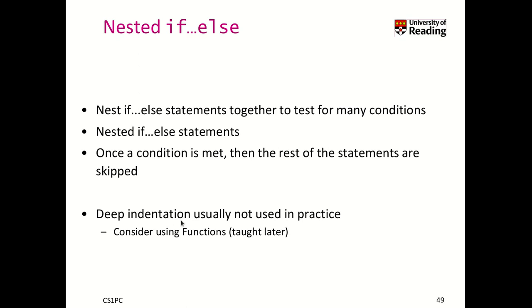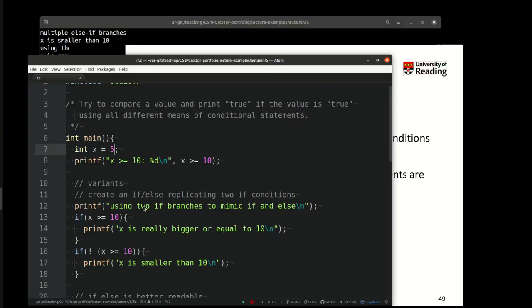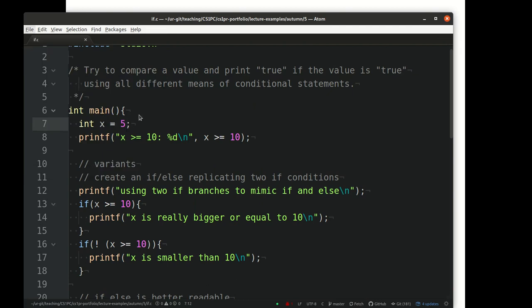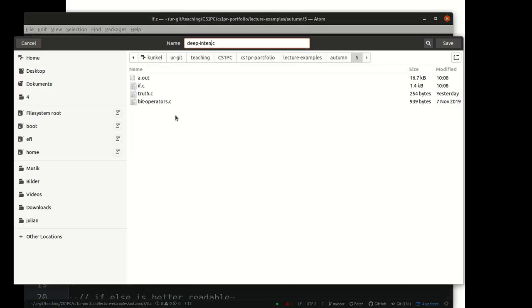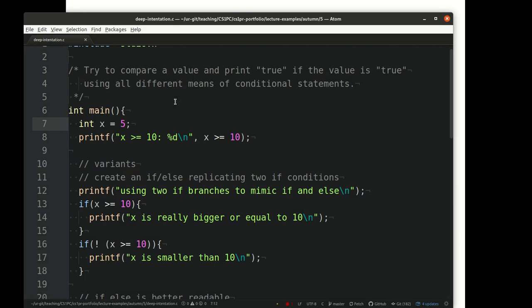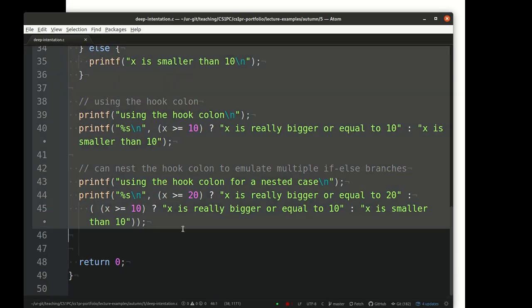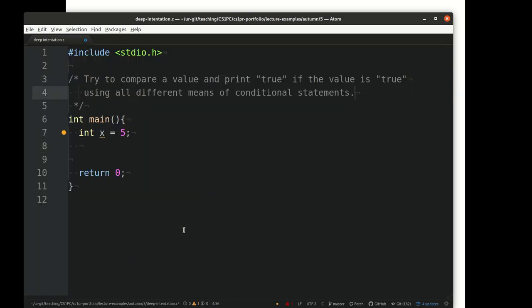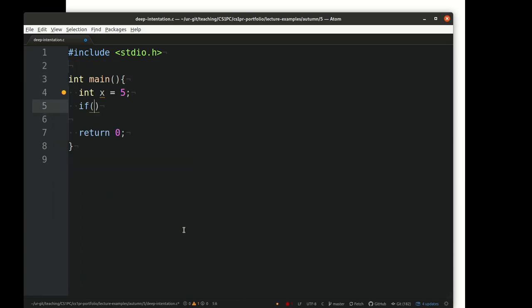You should try to avoid deep indentation. Let me show you what we mean by this. An indentation happens all the time when we open and close a block because that increases readability. I use two white spaces to indent the code further to make clear how the code belongs together.